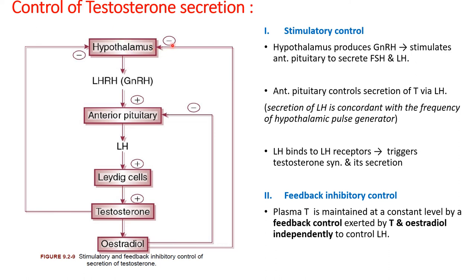Under stimulatory control, the hypothalamus produces gonadotropin-releasing hormone (GnRH), which stimulates the anterior pituitary to secrete two hormones: FSH (follicle-stimulating hormone) and LH (luteinizing hormone). The anterior pituitary controls testosterone secretion mainly through LH. The Leydig cells in the testis have receptors for LH; therefore, LH secreted by the anterior pituitary binds with LH receptors on the Leydig cells and triggers the synthesis and secretion of testosterone.